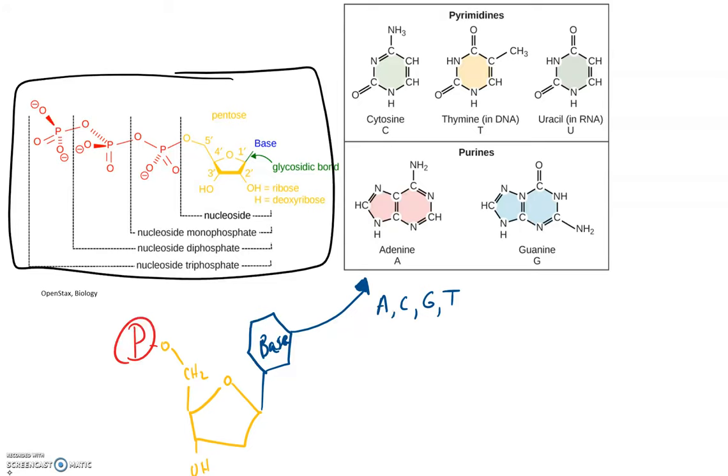Now, there are four possible bases for DNA, and there are four possible bases for RNA. The bases for DNA are adenine, cytosine, guanine, and thymine.